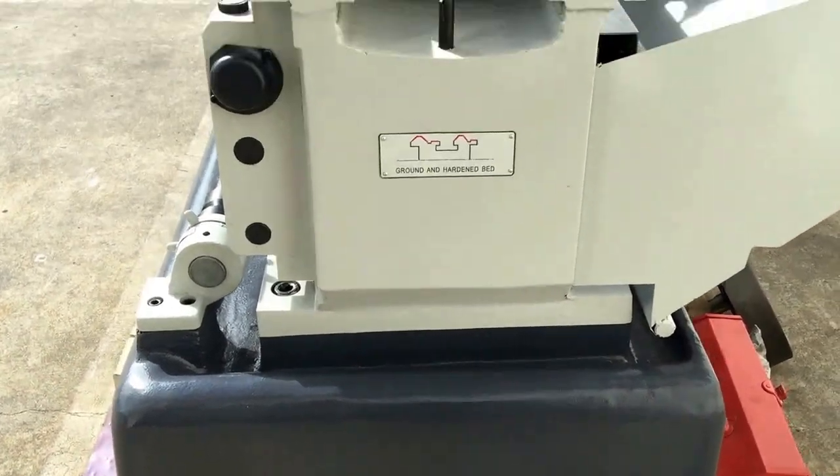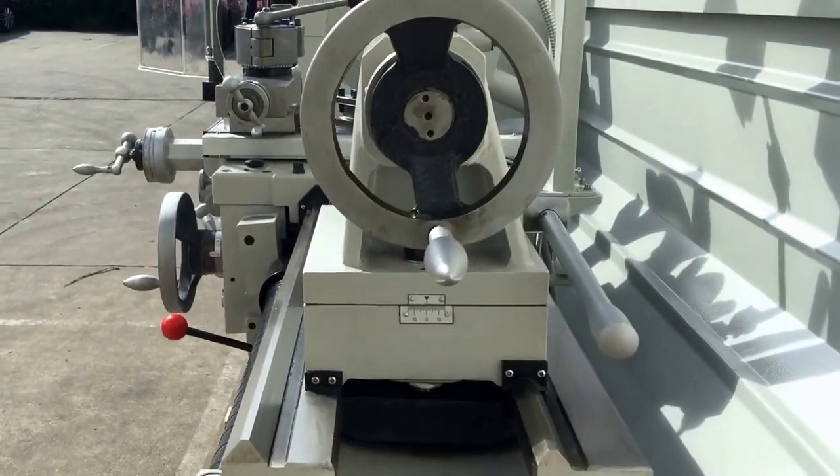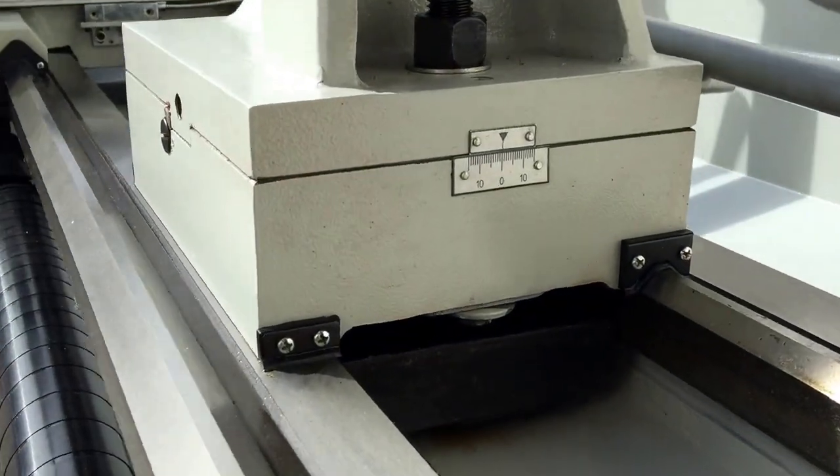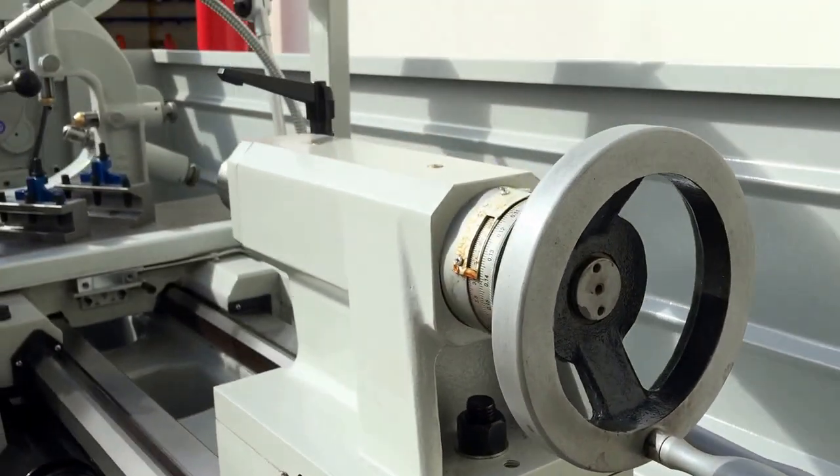We've got hardened ground bed ways and guide ways. Our tail stock has an offset there so if you want to offset the taper 10 degrees left and right you can obviously do that there as well.